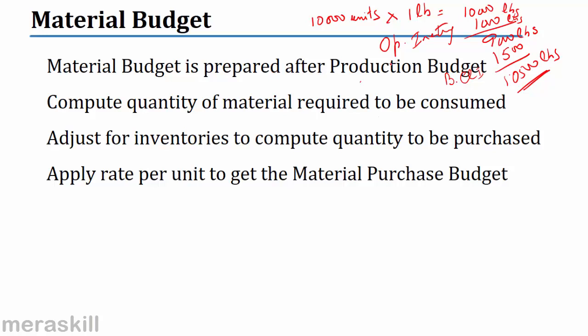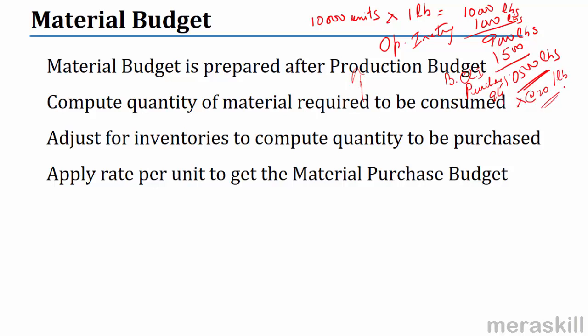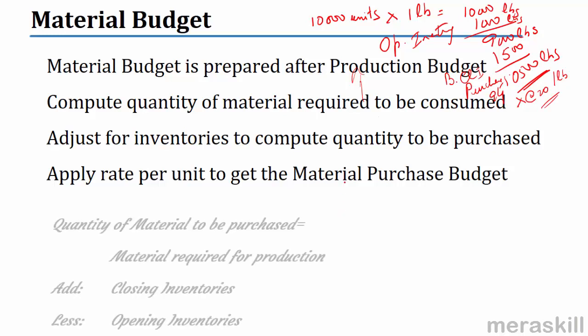To summarize: the material budget is prepared after the production budget. Compute the required quantity to be consumed based on the production budget. Then deduct opening inventories and add closing inventories to arrive at the purchase quantity. Apply the rate — say $20 per pound — to get the material purchase budget value.